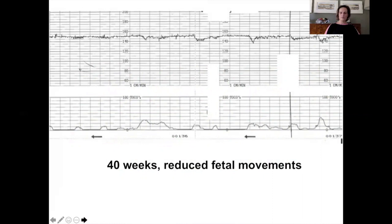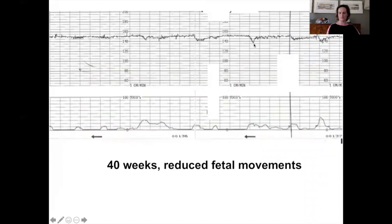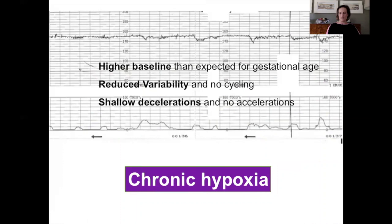This is a baby at 40 weeks gestation where the woman attended with reduced fetal movements. Many babies subjected to chronic hypoxia that have reached decompensation will present with reduced fetal movements. Reduced fetal movements is a very common presentation and only a small percentage will be chronic hypoxia, but it's very important to recognize those on the CTG. The baseline here is 150 — not what you would expect for a 40-week baby. On top of that, there is reduced variability and shallow decelerations. This is a very typical case of chronic hypoxia. This baby was delivered without further stress, pre-labour, and still sustained hypoxia.